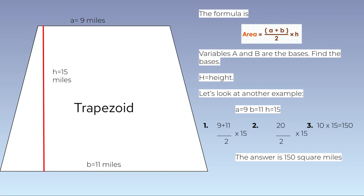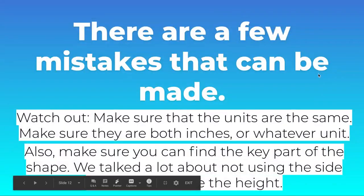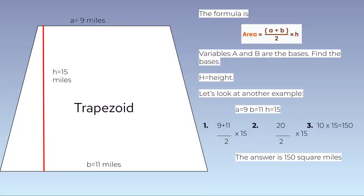Okay, let's do another one. Alright, so the formula is area equals base 1 plus base 2, a and b, divided by 2, times h. Remember that variables a and b are the bases. Remember, let's find the bases again. The two parallel sides are the bases. And of course, h is height. Let's look at another example.